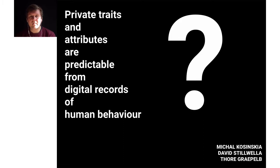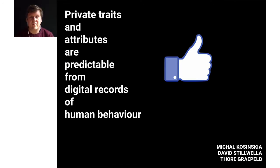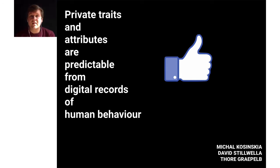I would like to start with this paper by Michael Kosinski and others, called 'Private Traits and Attributes are Predictable from Digital Records of Human Behavior.' What we're talking about here are Facebook Likes as the digital records of human behavior. This was a famous paper in which they showed the relationship between what people like on Facebook and private traits and attributes about them. This is also the paper at the heart of the Facebook Cambridge Analytica scandal.